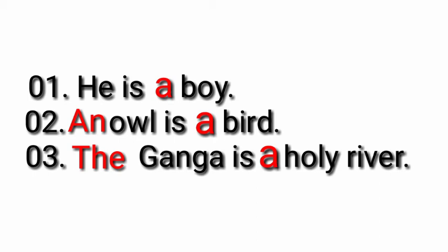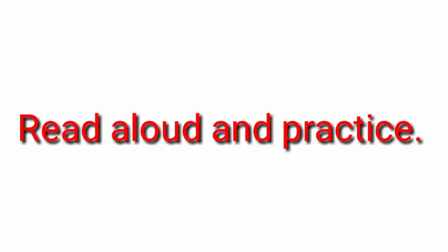I repeat once. He is a boy. In this sentence, a is an article. An owl is a bird - an and a, they are articles. The Ganga is a holy river - the and a are articles.